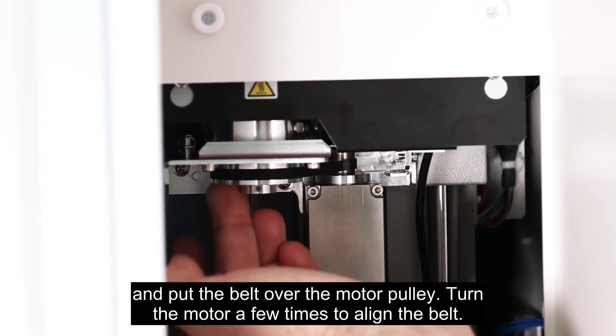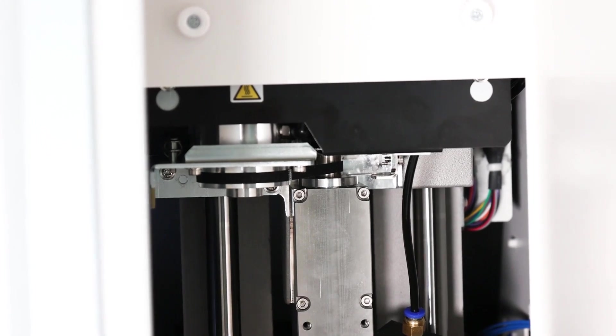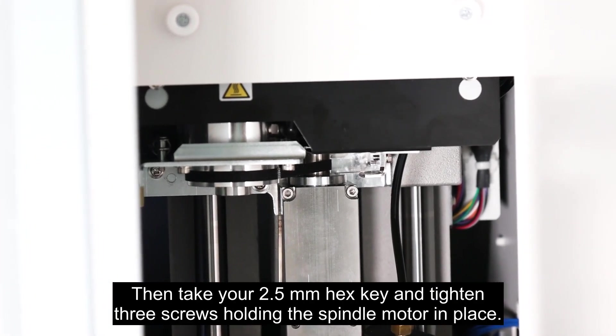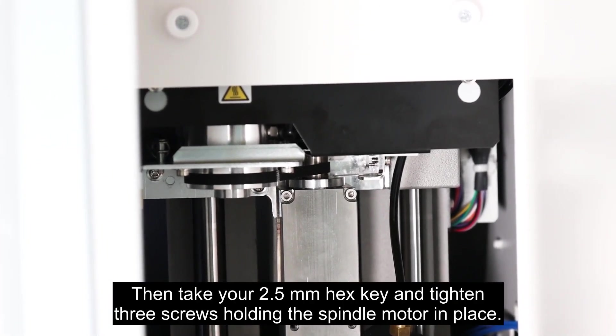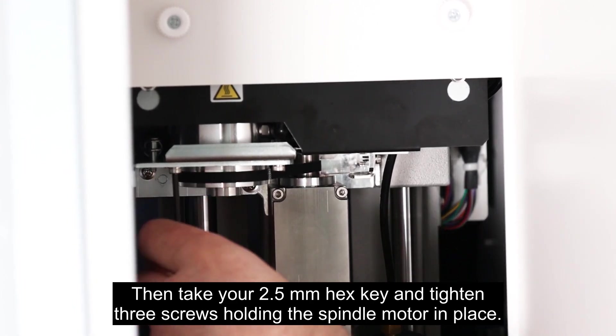Turn the motor a few times to align the belt. Then take your 2.5 millimeter hex key and tighten three screws holding the spindle motor in place.